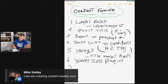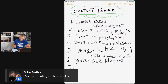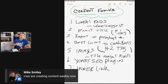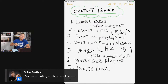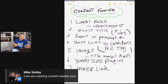Number seven is interlinking. If you have other posts that are related, you want to cross-promote them internally. This tells Google that you have related content, and when someone comes on your site you're able to keep them in your ecosystem longer.